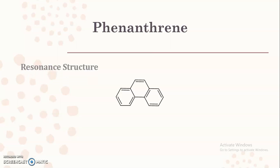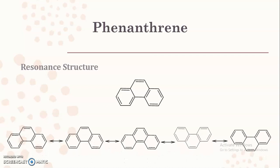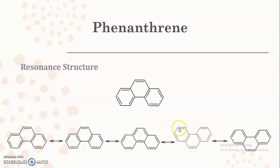There are five different resonating structures possible for phenanthrene. The first resonating structure is the one we have already seen. Then we can change the position of double bonds in the A ring to get the second resonating structure. Changing the double bonds in the central ring gives the third structure, changing them in the third ring gives the fourth, and rotating the positions again in the third ring gives the fifth resonating structure.